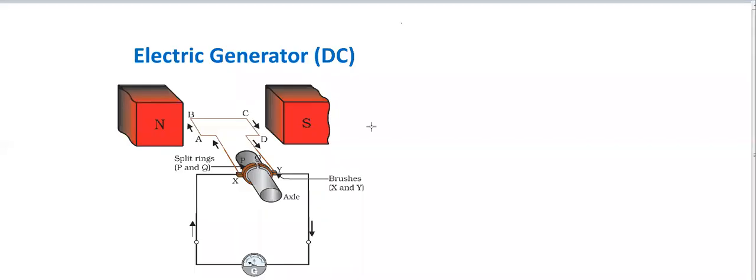This is the diagram of the DC generator, also called direct current generator. AC generator and DC generator work on the same principle. The only difference is that in DC generator, there are half rings in place of slip rings used in the AC generator. These split rings or half rings are called commutators.